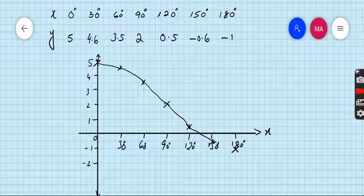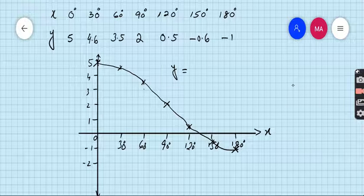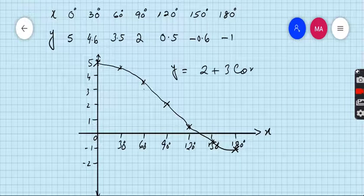Kindly wait, and now join this. This is your graph y equals 2 plus 3 cos x. I hope you completely understand how to draw the graph. You can draw more smooth curve than me because you have pencil and paper.